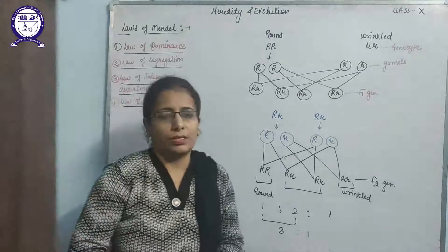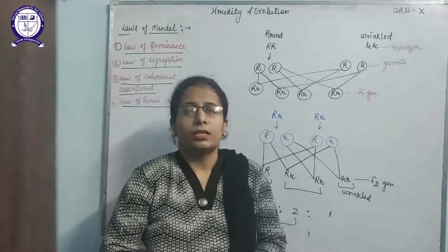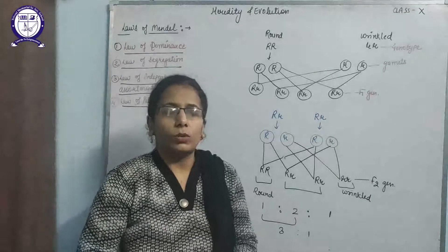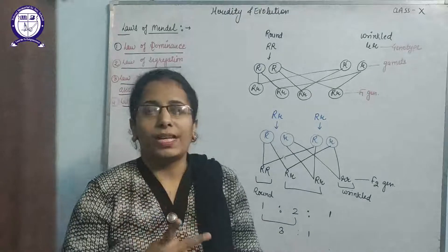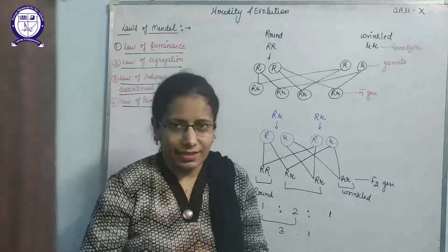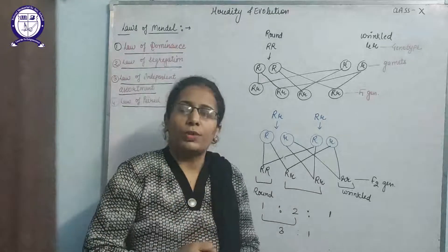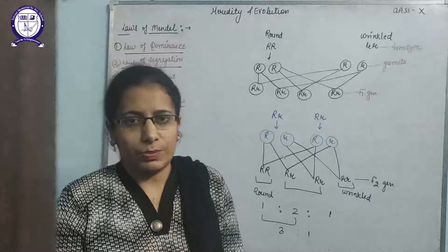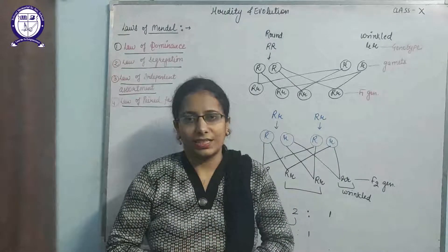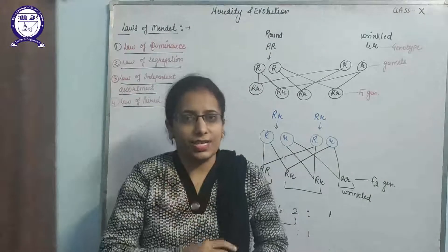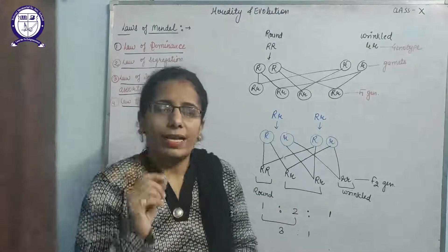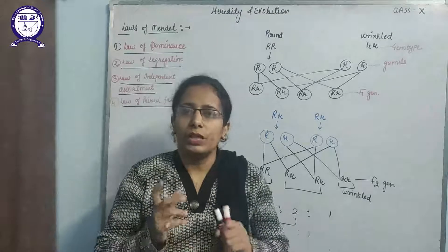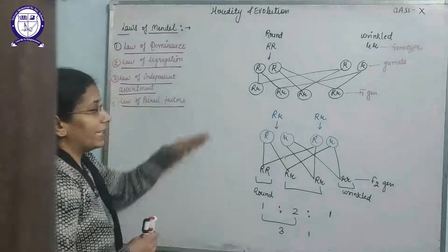First, the law of dominance. What does this law state? The law of dominance states that two alleles of a gene that code for a character — if one allele is dominant, meaning it can express itself, then the other allele will be recessive, which cannot express itself. So if one allele is dominant and the other is recessive, the recessive allele will not express itself in the presence of the dominant allele. That is known as the law of dominance.